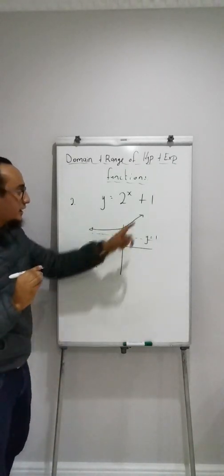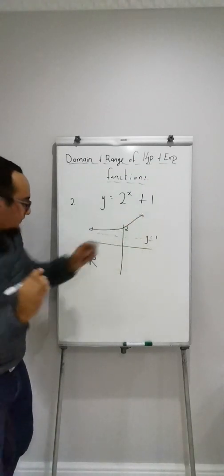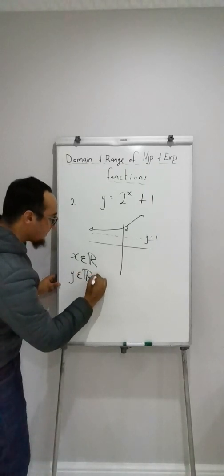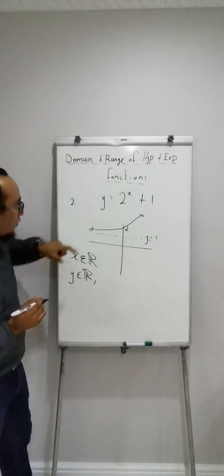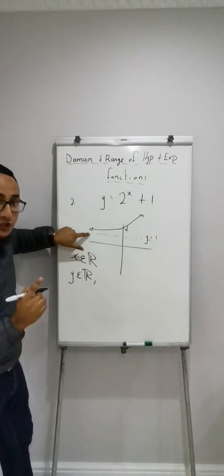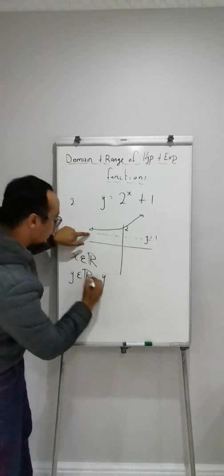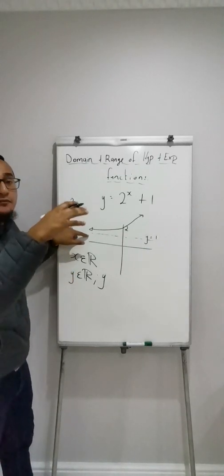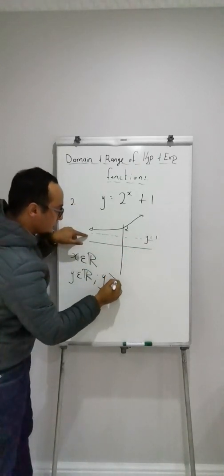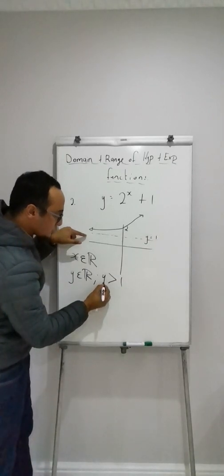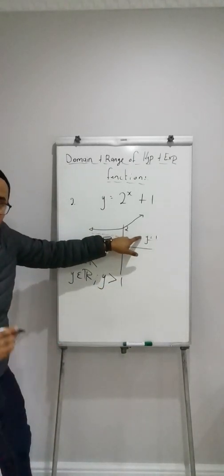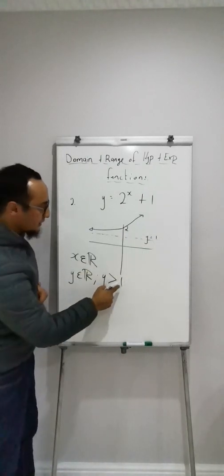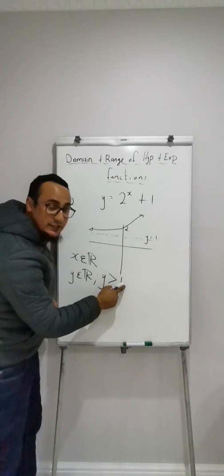The restriction comes with my asymptote. Don't ever forget that. Y is an element of real numbers but the restriction is, will my graph ever touch my asymptote? No. Will it go below it? No. Which means it can only go above. And what is that value over there? The value is 1. So y must always be above the value of my asymptote. If this value was 10, then this number would be equal to 10 over there.